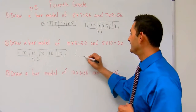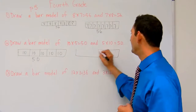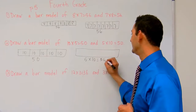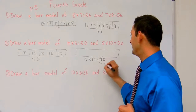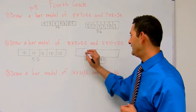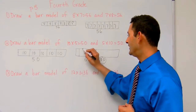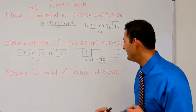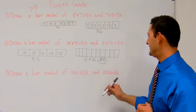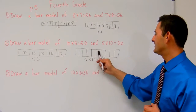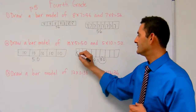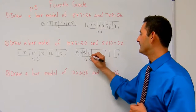Now let's draw a bar model for 5 times 10 equals 50. The total is 50, and I'm going to do 10 boxes: 1, 2, 3, 4, 5, 6, 7, 8, 9, and 10. Each one of these pieces will be worth 5.